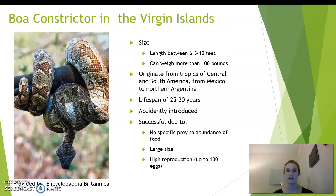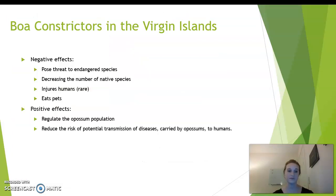The boa constrictor in the Virgin Islands is our next topic. They grow to be six and a half to 10 feet long and can weigh more than 100 pounds. They originate from Central and South America, from Mexico to northern Argentina. Their lifespan is about 25 to 30 years. They were accidentally introduced, though it is not known exactly where. They are successful due to the fact that they don't have specific prey, their large size, and they produce almost 100 eggs each time. Some negative effects are that they pose a threat to endangered species, decrease the number of native species, injure humans (although rarely), and eat pets. Some positive effects, however, are that they regulate the possum population, which can also decrease the amount of disease transmission to humans.